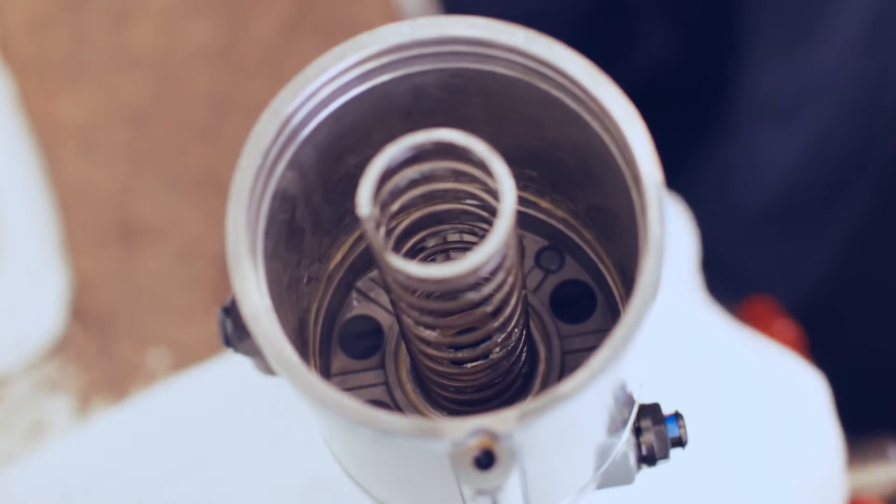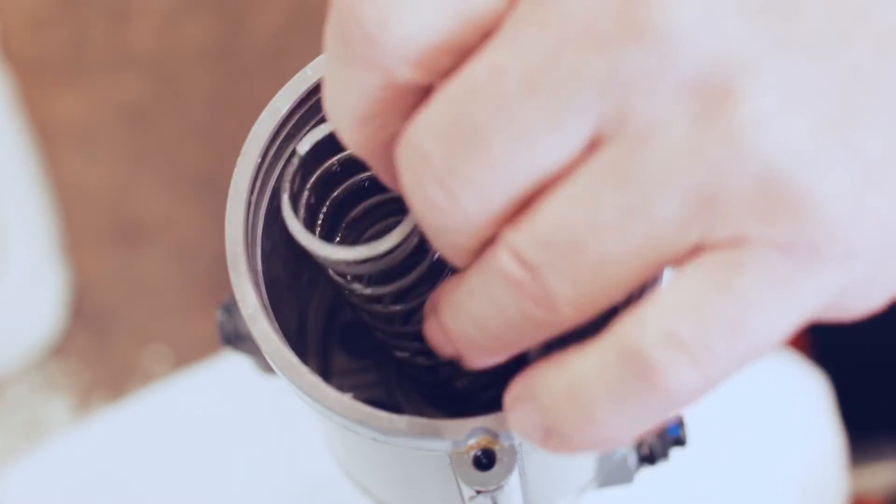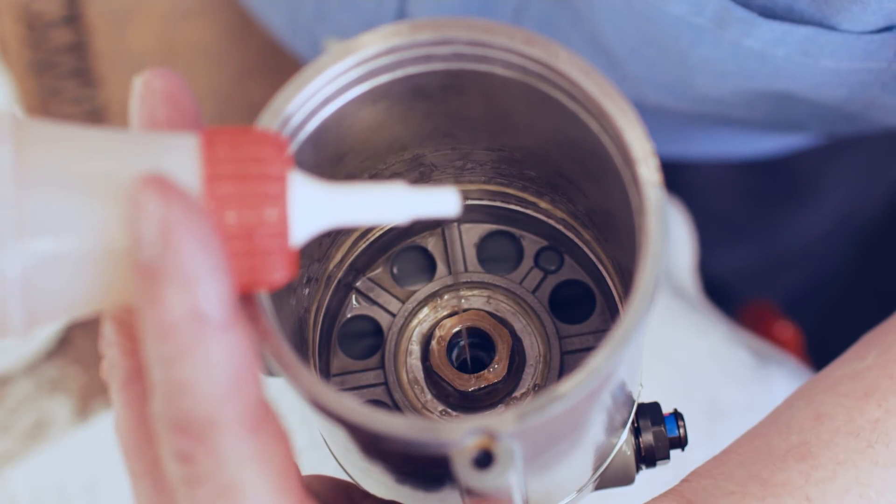Step 11, pump the piston up and down using the M6 bolt several times to circulate oil in the tool. Step 12, remove spring and piston to inspect oil level in the hole and add oil if necessary.